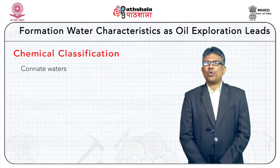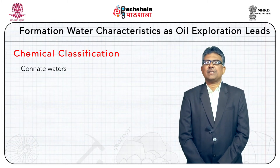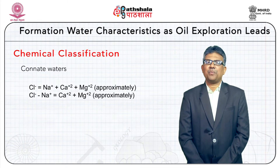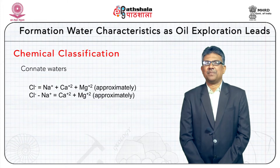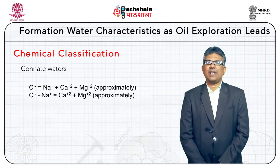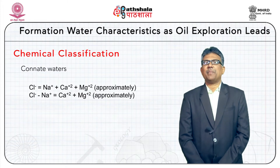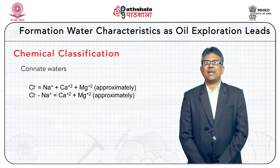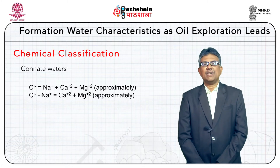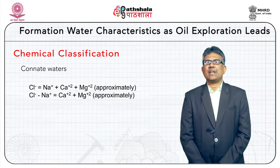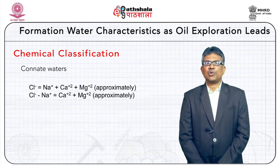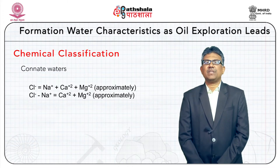In connate waters, which do not contain sulfate or bicarbonate, the only anion present is chloride, and the entire chloride is balanced by all cations — sodium, calcium, and magnesium. Subtracting sodium from chloride gives the equivalent of calcium and magnesium. Hence, the ratio (Cl − Na)/Mg: if less than one, the water is Type C — chloride-magnesium; if greater than one, it is Type D — chloride-calcium. In both Type C and D, the Na/Cl value always remains less than one, whereas in meteoric waters it always remains more than one.